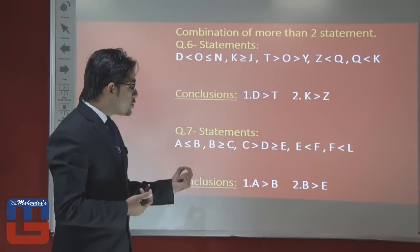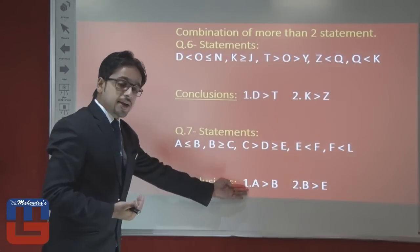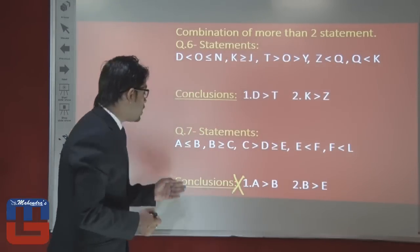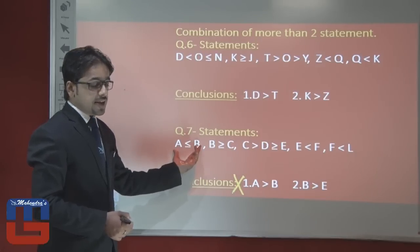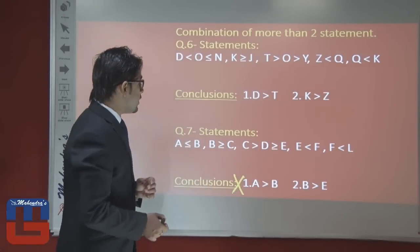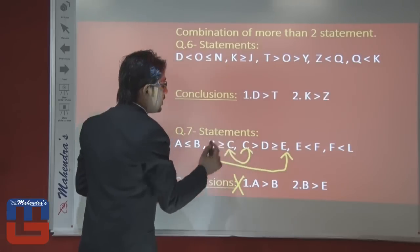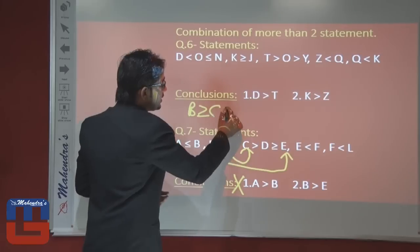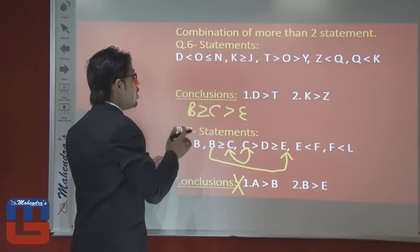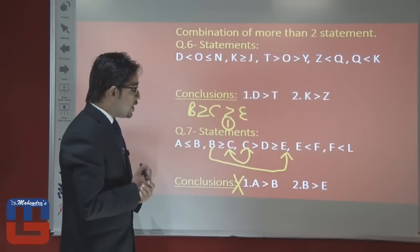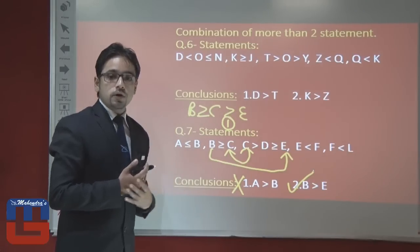In the next question, the conclusion asks about A and B. We can directly see A ≤ B in the statement, so A > B is false. For the second conclusion B > E: B is in statement two and E is in statement three, with common term C. B ≥ C and C > E, so by priority B > E. This matches conclusion two, so the answer is only conclusion two follows.